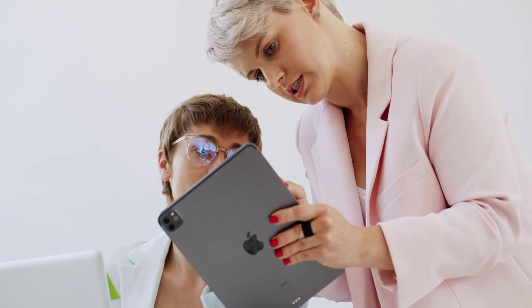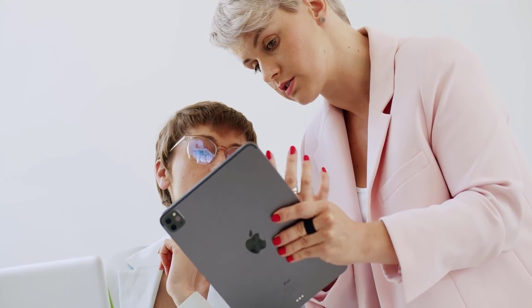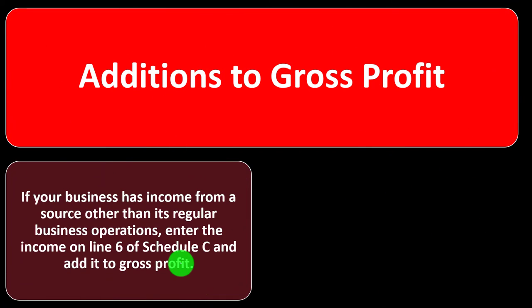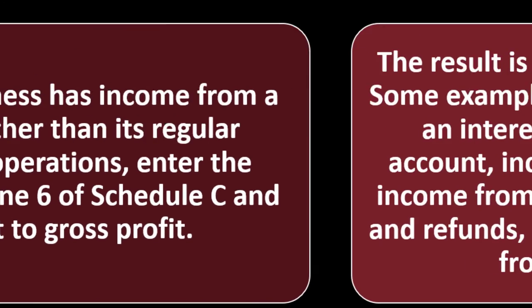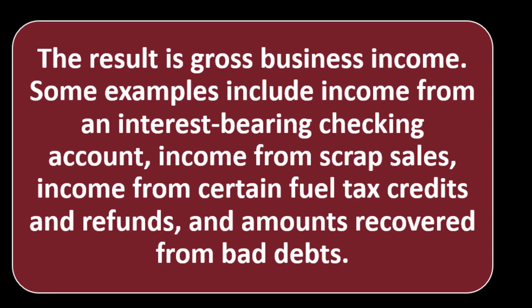If you do this calculation and it's way off, then something is off and you want to look into it. If it's way off and you can't explain it, and an auditor does a similar calculation and can't figure out why, that's going to be a problem. So you want to double-check that. Additionally, if your business has income from a source other than regular business operations, enter it on line six of Schedule C and add it to gross profit — the result is gross business income. Examples include income from an interest-bearing checking account, scrap sales, certain fuel tax credits and refunds, and amounts recovered from bad debts.